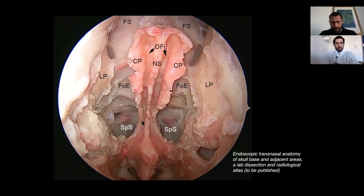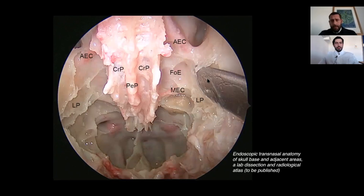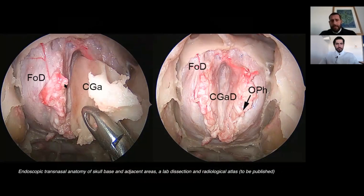Here we have the posterior ethmoid arteries at the skull base, the sphenoid sinus, and frontal sinuses anteriorly. We remove the olfactory mucosa to expose the bone of the cribriform plate. If needed, you can also remove the lamina papyracea bilaterally to expose the periorbita bilaterally. After cutting the ethmoid arteries, you remove the bone of the ethmoid roof and cribriform plates to expose the underlying dura.